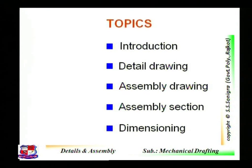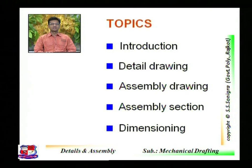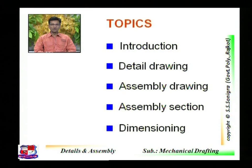To convey that message, company A would need drawings of the piston, connecting rod, crankshaft, cylinder, push rod, and all components used to make an IC engine. After drawing all these component details, it is also needed to show how all these components are to be assembled together. So the company needs to prepare two types of drawings: one is the detail drawing of each component, and another is the assembly drawing showing how the IC engine appears once all components are assembled. This is where the concept of detail drawing and assembly drawing comes into picture.